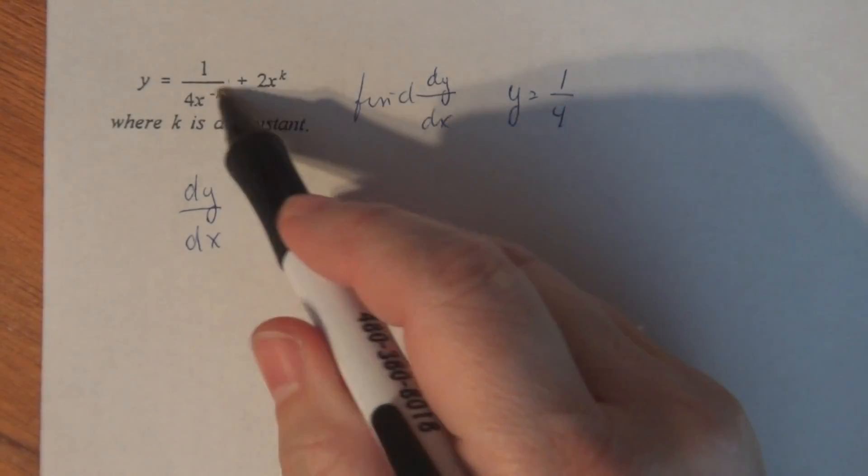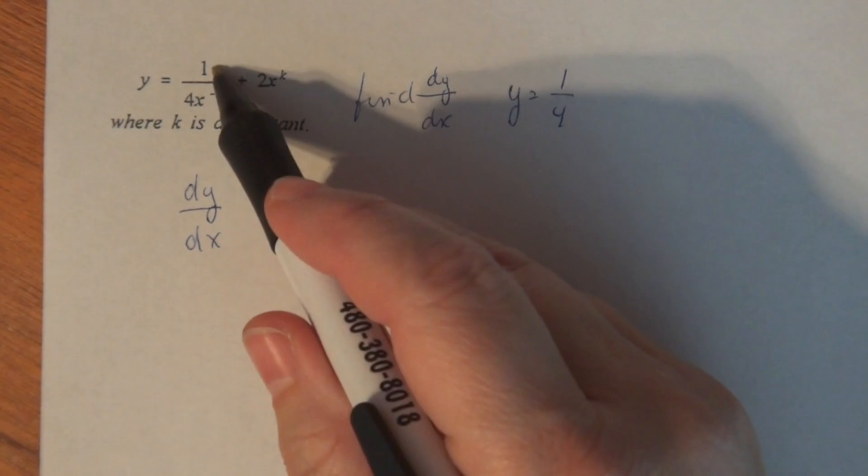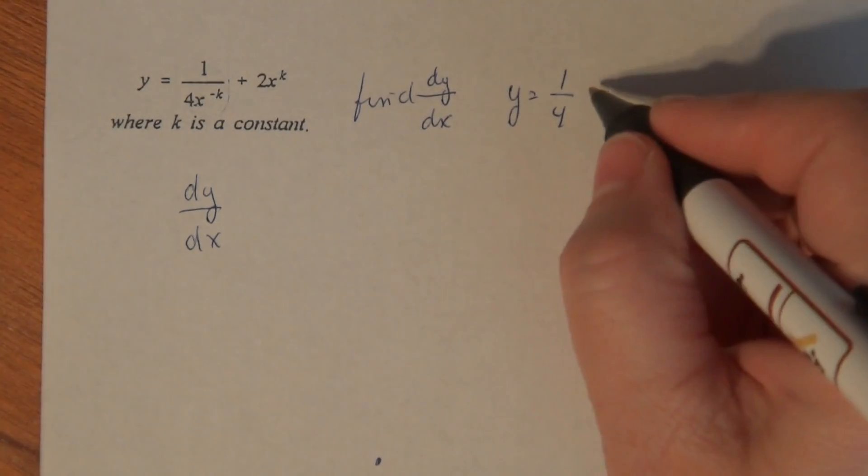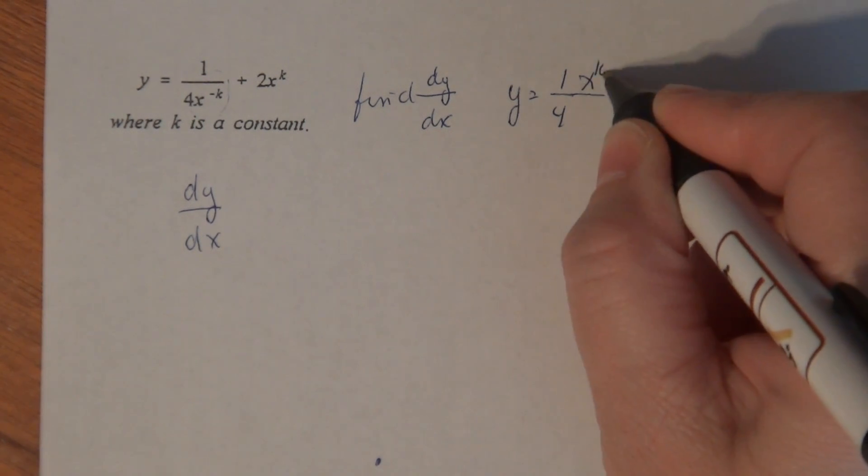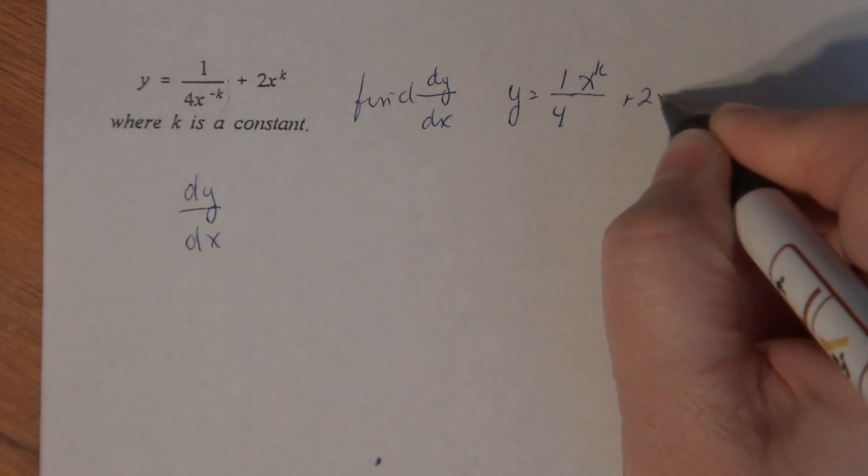This x to the minus k means that if I pop that up to the numerator, I get a positive k. So I'll write it like this: x to the k plus 2x to the k.